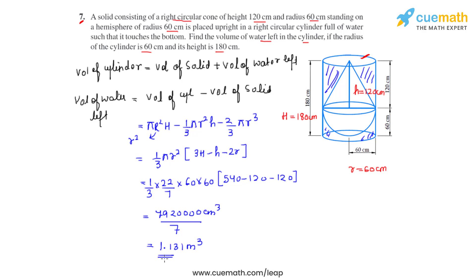So this is the amount of water or the volume of water which was left into the cylinder after we had immersed a solid which was consisting of a right circular cone and a hemisphere.